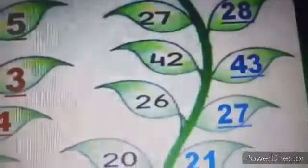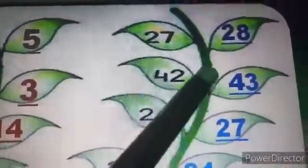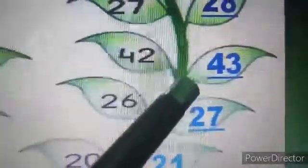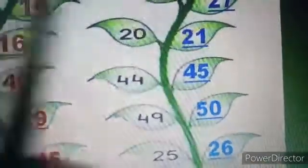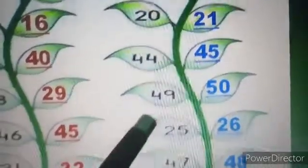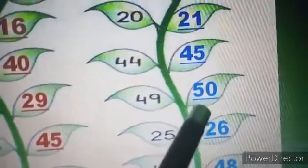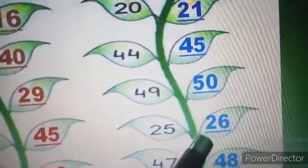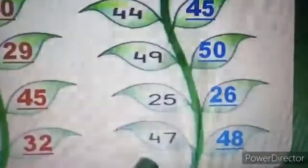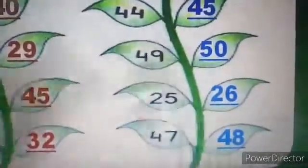Now, let us see the next one. What comes after 27? The answer is 28. What comes after 42? The answer is 43. What comes after 26? The answer is 27. What comes after 20? The answer is 21. What comes after 44? The answer is 45. What comes after 49? The answer is 25. What comes after 25? The answer is 26. What comes after 47? And the answer is 48.